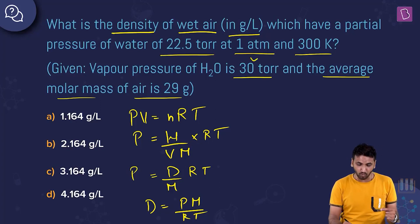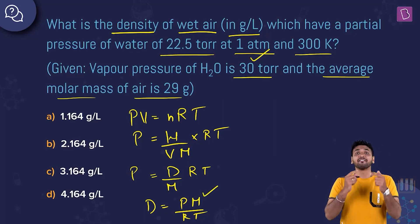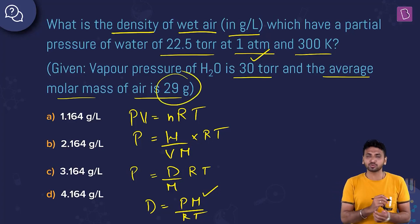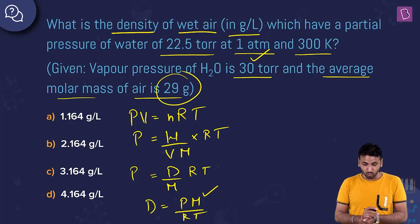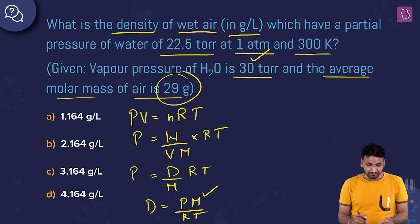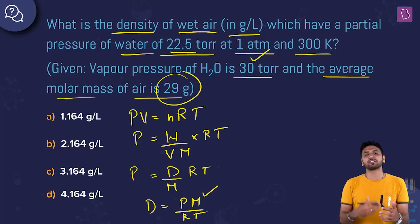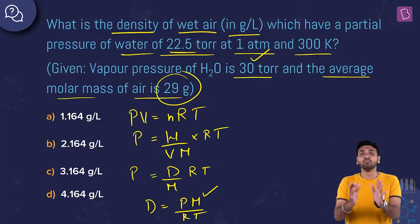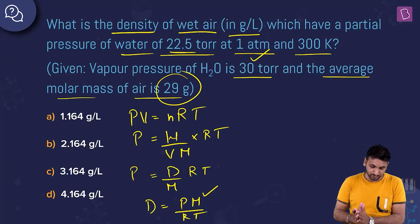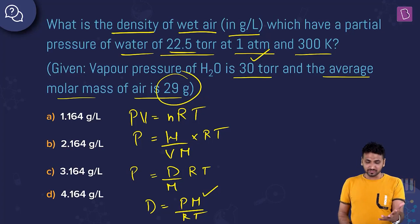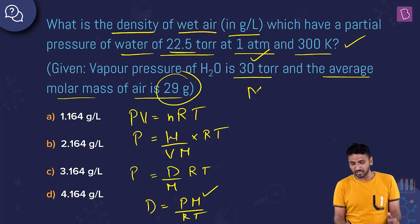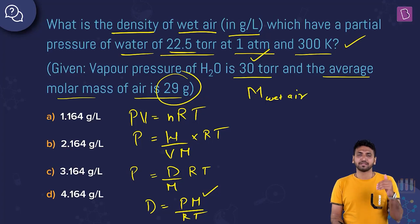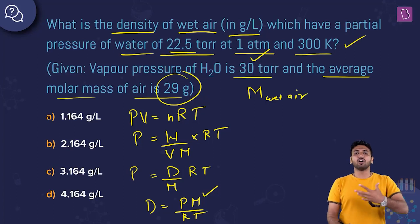Pressure is 1 atm. We need the molar mass of wet air — 29 g/mol is only for dry air. The partial pressure of water is 22.5 torr, and we need to use this data to find the molar mass of wet air. R is the universal gas constant and temperature is 300 K.